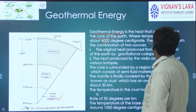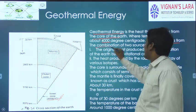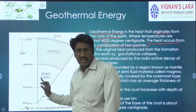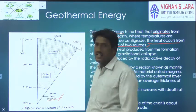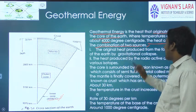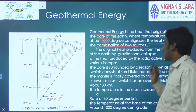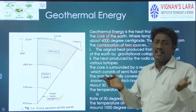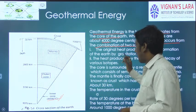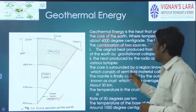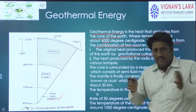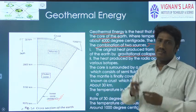The heat inside the earth originates from two sources. The first reason is the external heat produced from the formation of the earth by gravitational collapse. While the earth was forming due to gravitational collapse, heat was generated — that is the first reason.